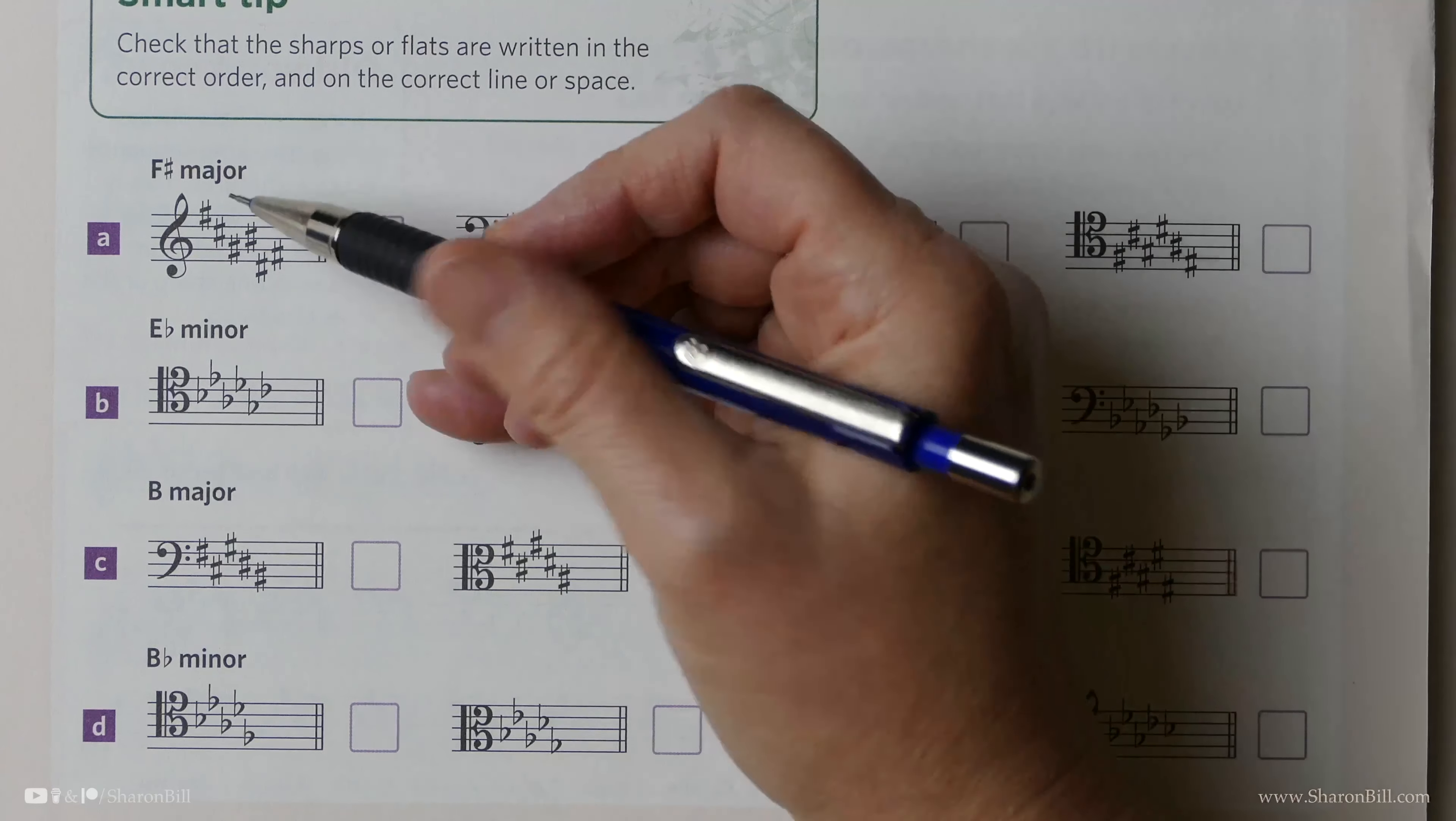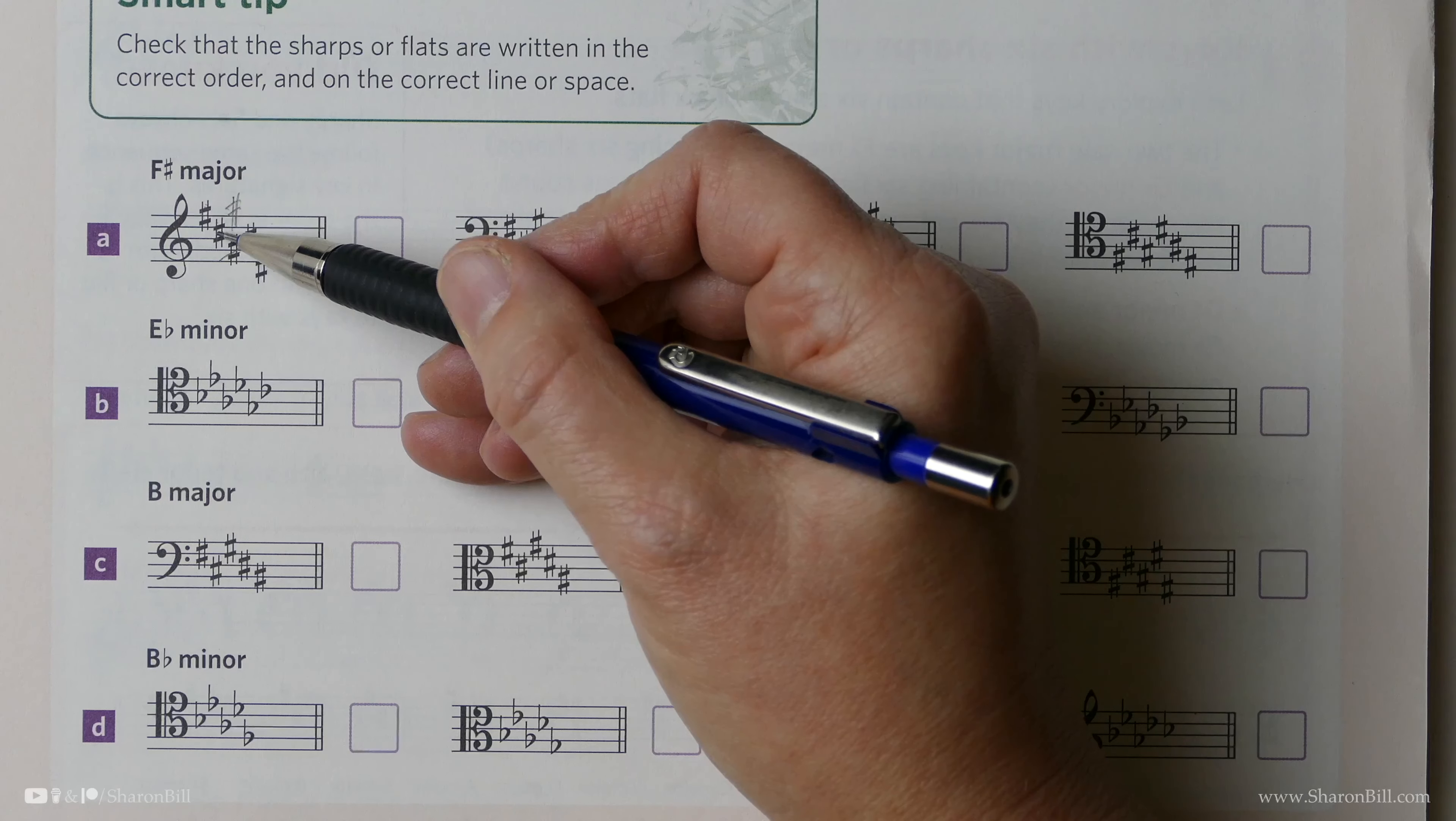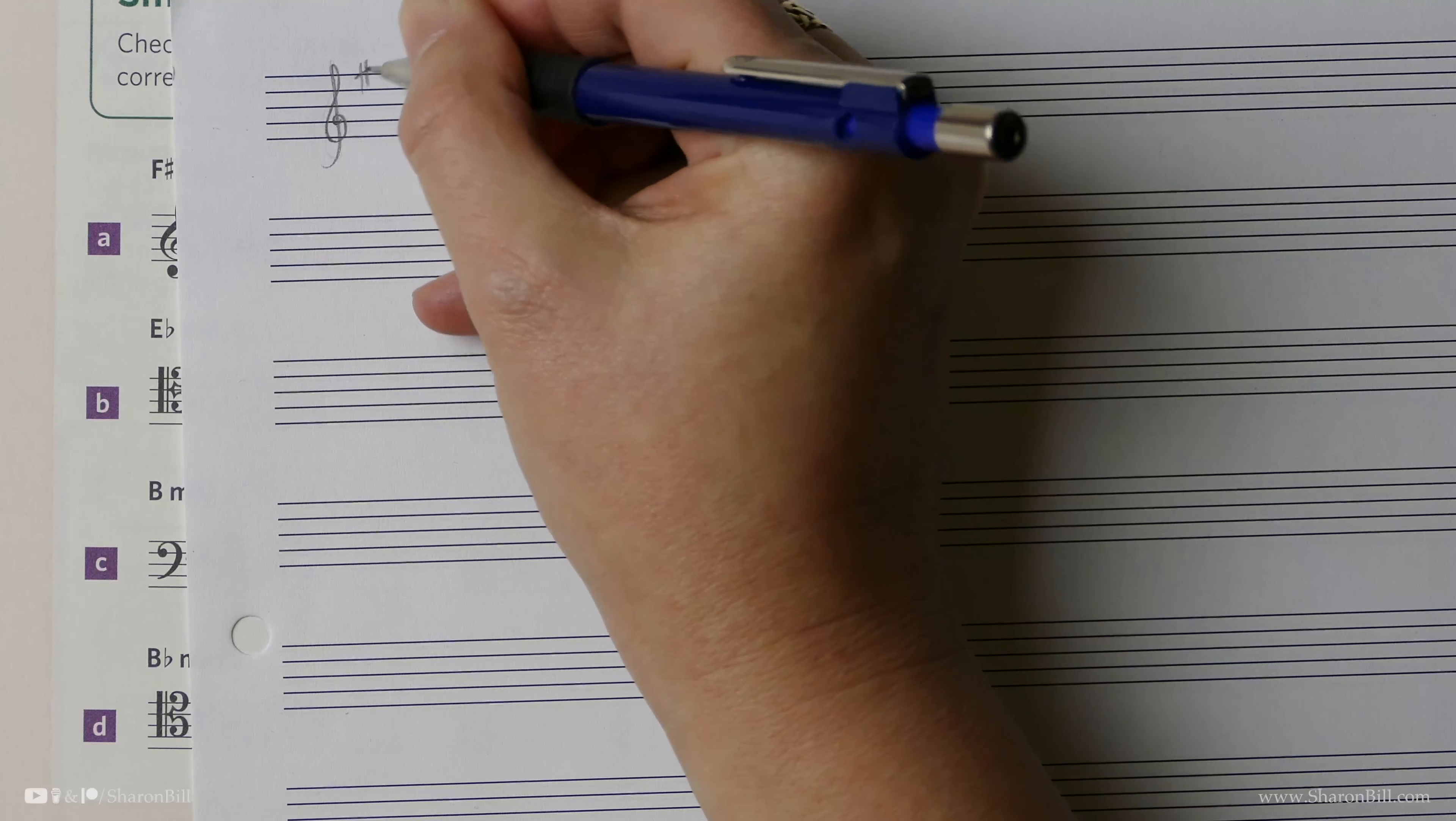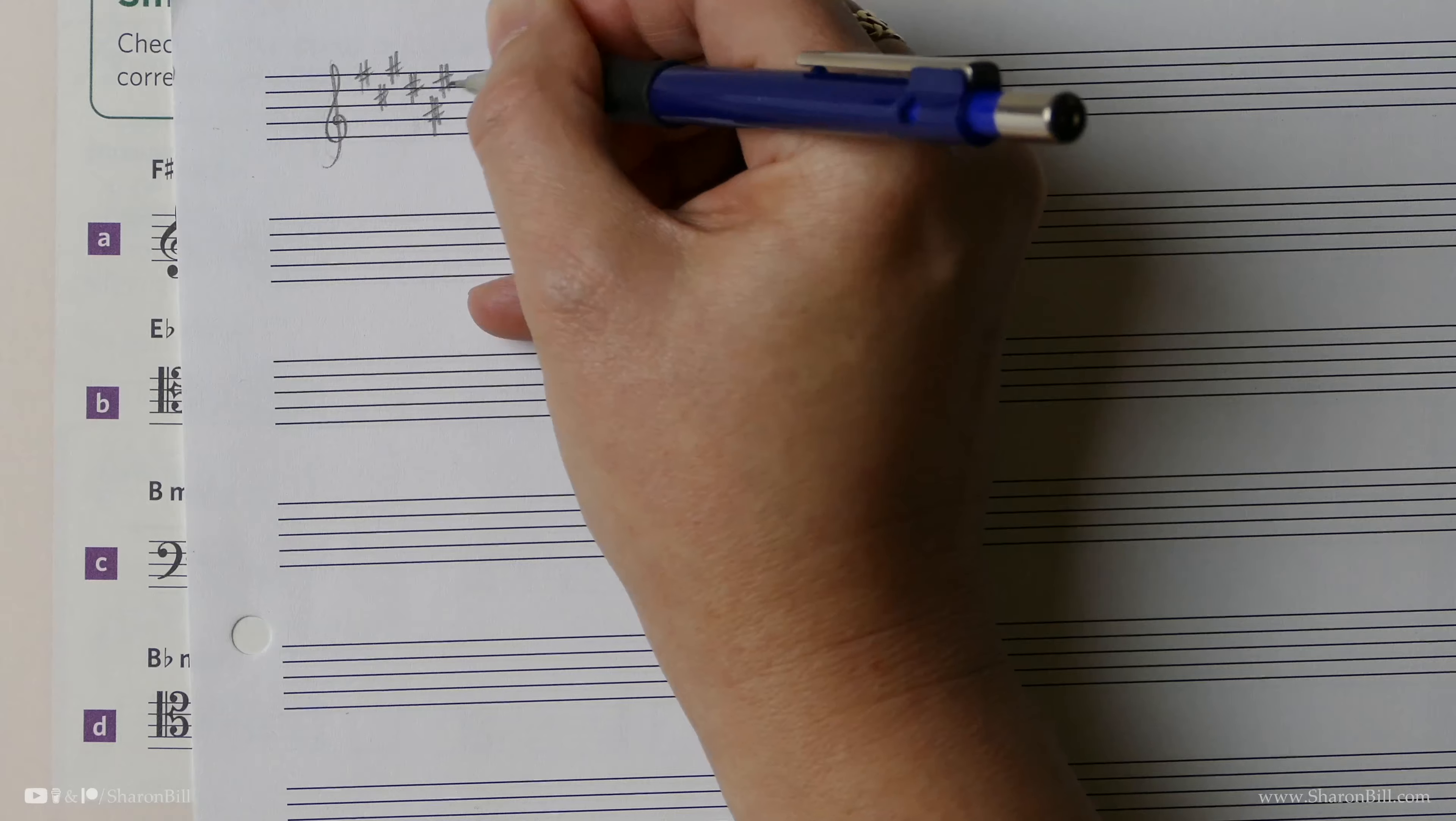Now, this one can't be correct because F-C... Yes, this is G-sharp, but it should be this high G. We go as high as we can here without using the ledger line. F-C-G-D. Now, that should be a D-sharp. It should go... Let's get some manuscript paper. It should go, in the treble clef, F-C-G-D. Now, A has to be low, otherwise it would have ledger lines, and then E. That's what we're looking for.